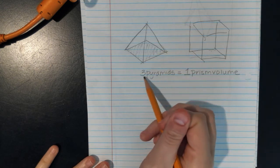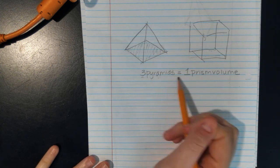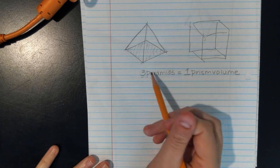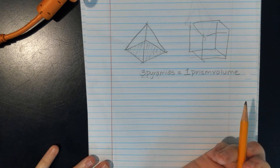So I'm saying here three pyramids equal one prism volume. But what if we only wanted the one pyramid volume? So if I have three of them here, how can I get one of them?